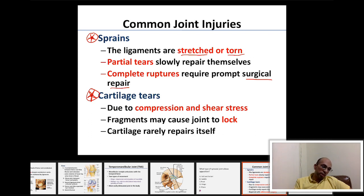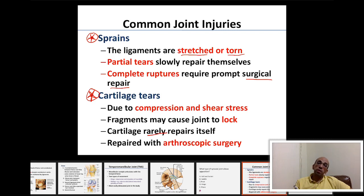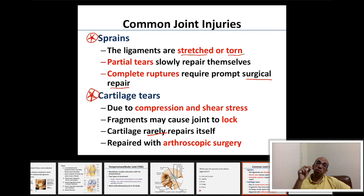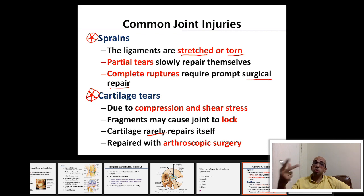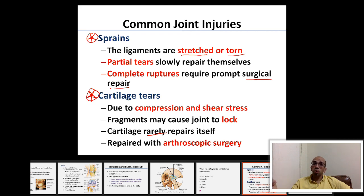Cartilage rarely repairs itself, and in some cases arthroscopic surgery is needed. 'Arthro' means joint and 'scope' means vision, so an arthroscope is a camera used to look inside a joint cavity to perform surgery — this is called arthroscopic surgery.